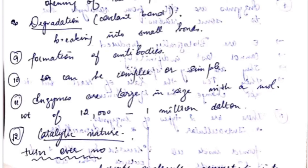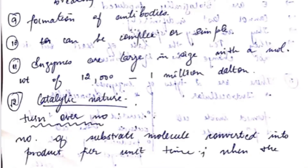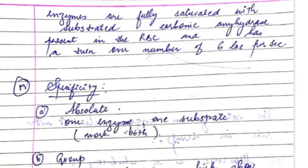Enzymes have catalytic nature — the turnover number is the number of substrate molecules converted into product per unit time when the enzyme is fully saturated with substrate. For example, carbonic anhydrase, present in the RBC, has a turnover number of six lakh per second.